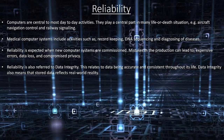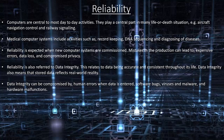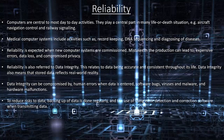Reliability is also referred to as data integrity. This relates to data being accurate and consistent throughout its life. Data integrity also means stored data reflects real-world reality. Data integrity can be compromised by human errors when data is entered, software bugs, viruses and malware, and hardware malfunctions. To reduce risks to data, backing up of data is done regularly, and error detection and correction software is used when transmitting data.